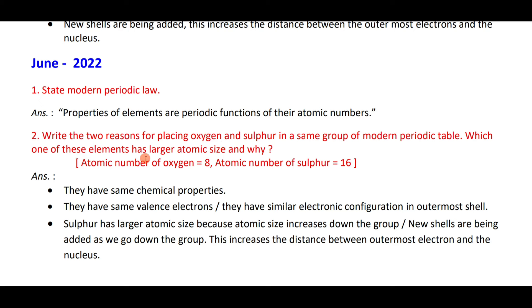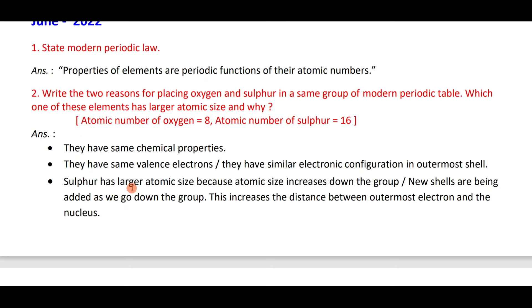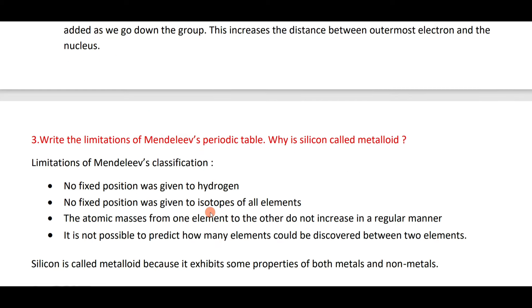Oxygen and sulfur are in the same group because they have the same chemical properties and the same number of valence electrons. Sulfur has a larger atomic size because atomic size increases down the group — new shells are added, increasing the distance between the outermost electron and the nucleus.